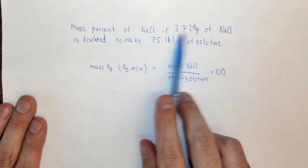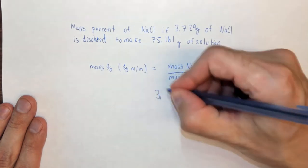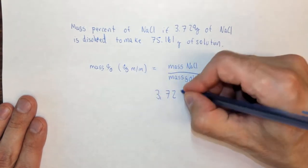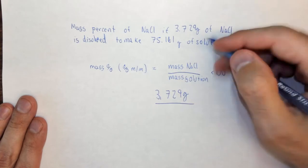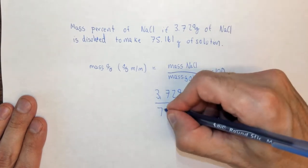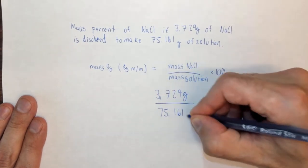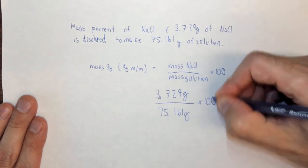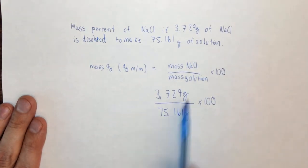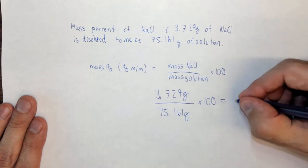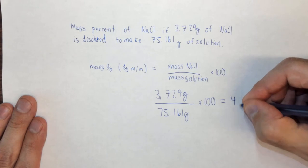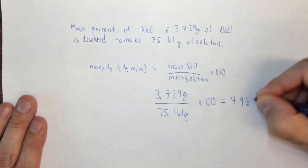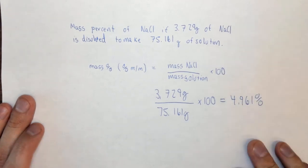The mass of NaCl is given as 3.729 grams divided by the mass of the solution, which is 75.161 grams, times 100. Looking at sig figs, we have four here and five here, so our answer should have four significant figures. This comes out to be 4.961% to four sig figs.